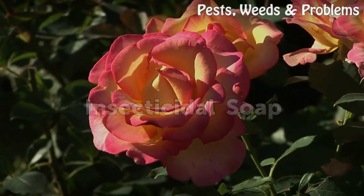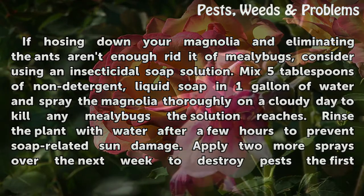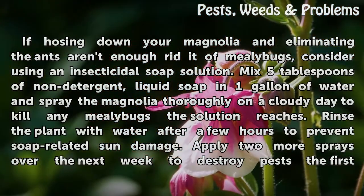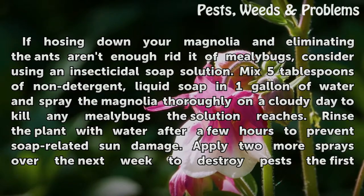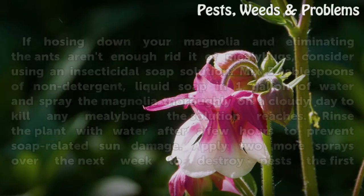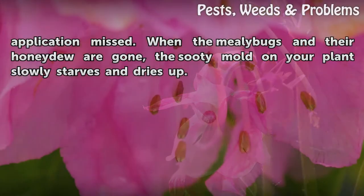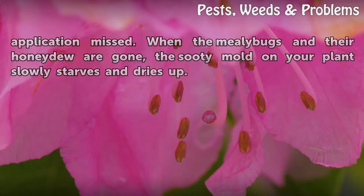Insecticidal soap. If hosing down your magnolia and eliminating the ants aren't enough to rid it of mealy bugs, consider using an insecticidal soap solution. Mix 5 tablespoons of non-detergent liquid soap and 1 gallon of water and spray the magnolia thoroughly on a cloudy day to kill any mealy bugs the solution reaches. Rinse the plant with water after a few hours to prevent soap-related sun damage. Apply two more sprays over the next week to destroy pests the first application missed. When the mealy bugs and their honeydew are gone, the sooty mold on your plant slowly starves and dries up.